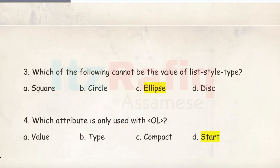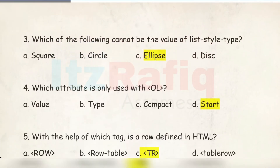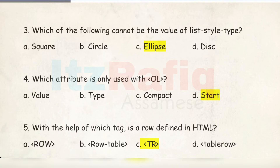Number 3: Which of the following cannot be a value of list-style-type? The answer is 'ellipse', because we can use square, circle, or disc to create an unordered list, but ellipse is not a valid option. Number 4: Which attribute is only used with the ol tag? It is 'start', because the unordered list does not use the start attribute.